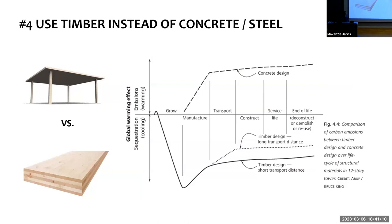The fourth strategy is using timber instead of concrete and steel. With concrete, global warming potential increases over the product life. With timber, you have a plant-based product: in the growth stage, trees absorb carbon, which then gets locked in and stored in the building product for the life of that product. Even with different transportation scenarios, you still get a huge benefit. Using bio-based materials like timber, and the ability for mass timber to replace concrete and steel, is really exciting.